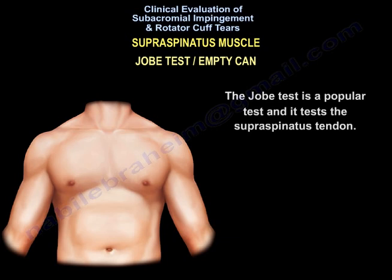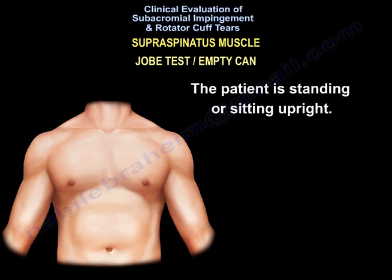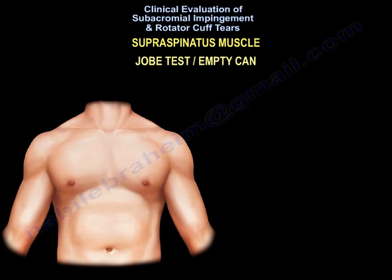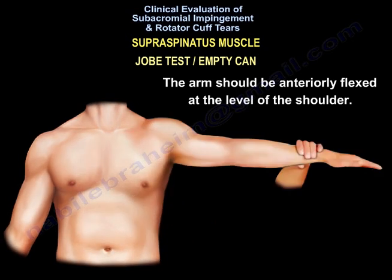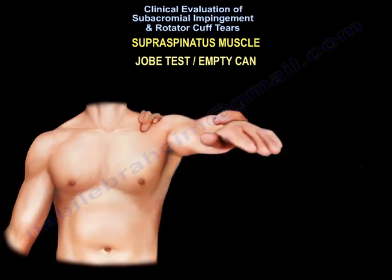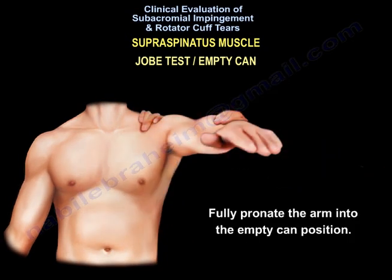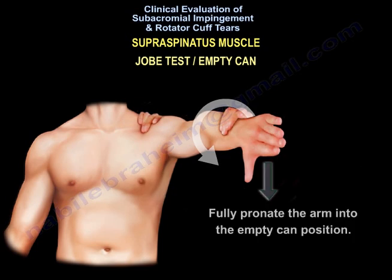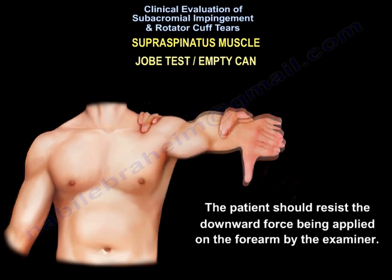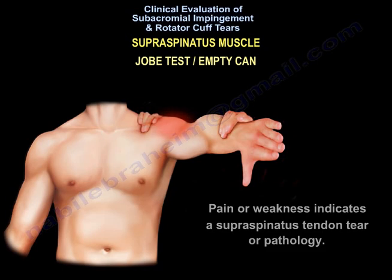Jobe's test is a popular test that tests the supraspinatus tendon. The patient is standing or sitting upright with the arm anteriorly flexed at the level of the shoulder. Fully pronate the arm into the empty can position. The patient should resist the downward force applied on the forearm by the examiner. Pain or weakness indicates supraspinatus tendon tear or pathology.